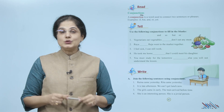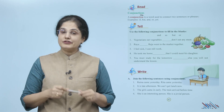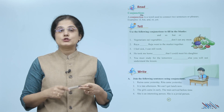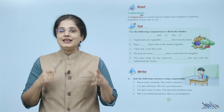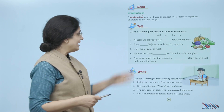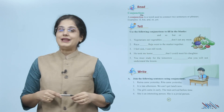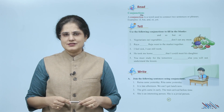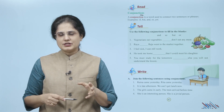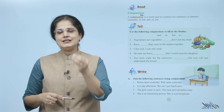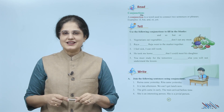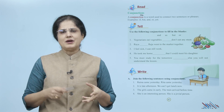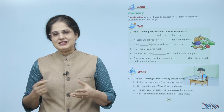Use the following conjunctions to fill in the blanks. The conjunctions given to you are: and, so, but, or. Use these conjunctions to fill in the blanks in the sentences. For example, the first sentence is: Vegetarians eat vegetables, dash don't eat any meat. So what will go in the blank? But. So: Vegetarians eat vegetables, but don't eat any meat.